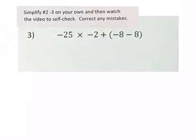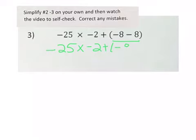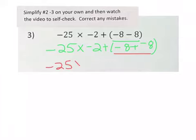Again, we go with PEMDAS. We have parentheses, so we do those first — everything else gets copied down. We have negative 8; we change the subtraction to addition and take the opposite integer. Looking inside, we have negative 25 times negative 2, plus negative 8 plus negative 8. Same sign, so we add and keep: negative 8 plus negative 8 is negative 16.